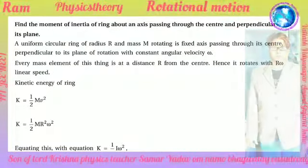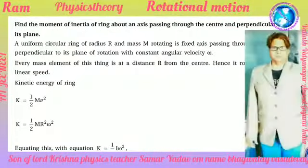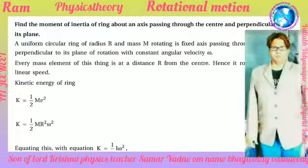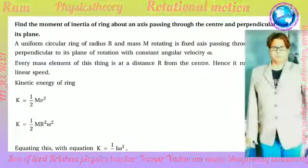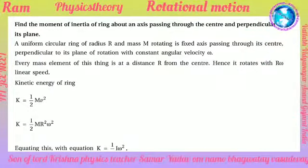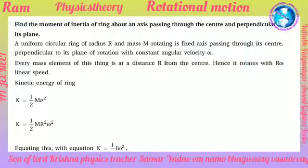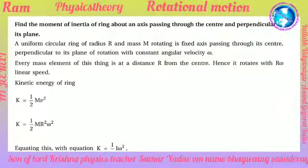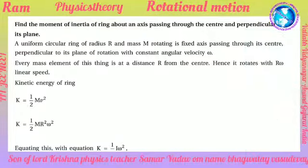Find the moment of inertia of a ring about an axis passing through the center and perpendicular to its plane. A uniform circular ring of radius R and mass M rotating about a fixed axis passing through its center perpendicular to its plane with constant angular velocity omega.